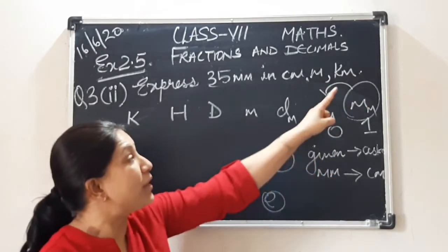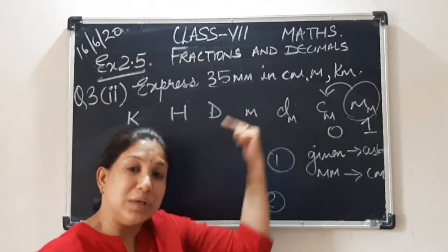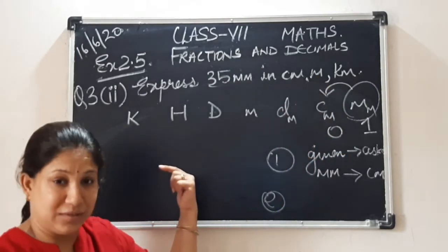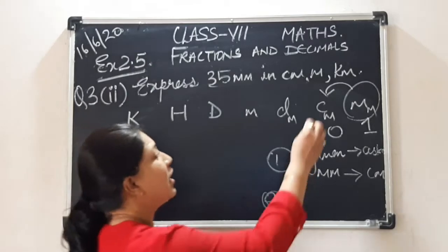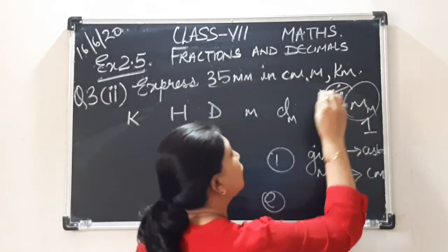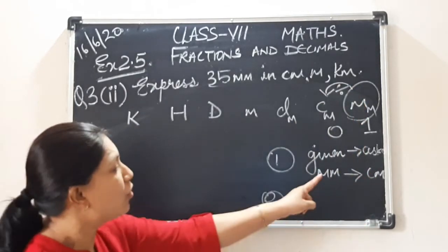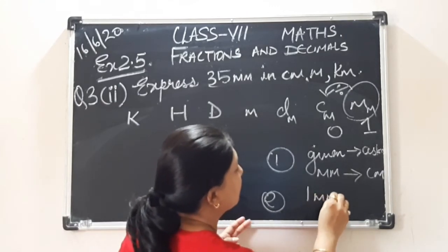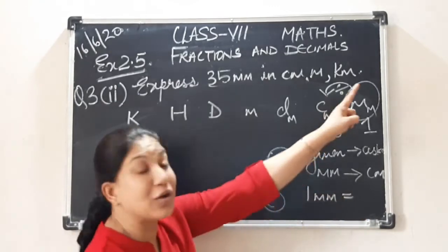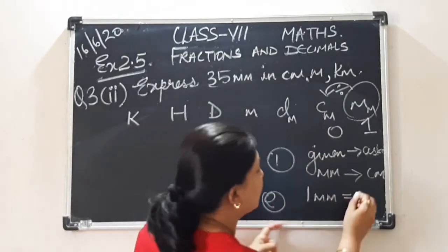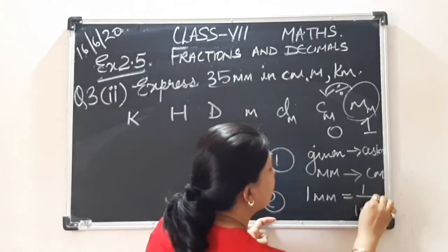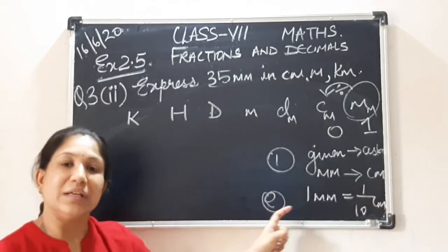Is it clear? But because we are moving towards the left hand side, backward direction, I told you, you will divide. So now it will become 1 millimeter equal to, because we are dividing, 1 by 10 centimeters. Easy?